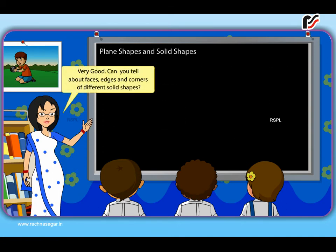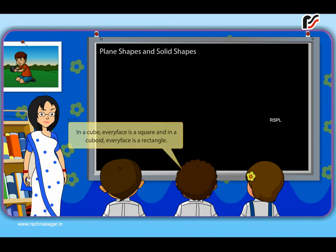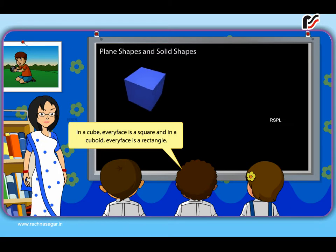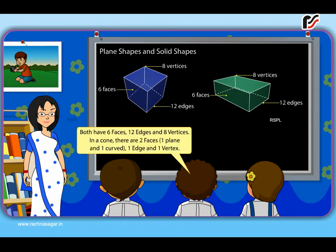Very good! Can you tell about faces, edges and corners of different solid shapes? In a cube, every face is a square and in a cuboid, every face is a rectangle. Both have six faces, twelve edges and eight vertices.